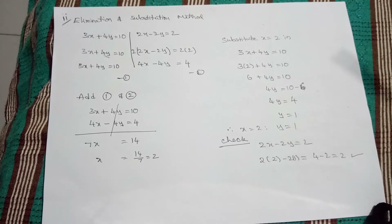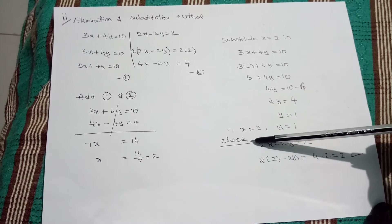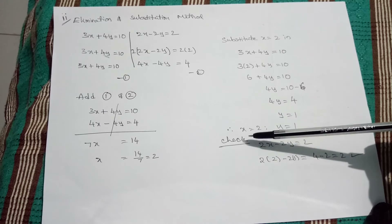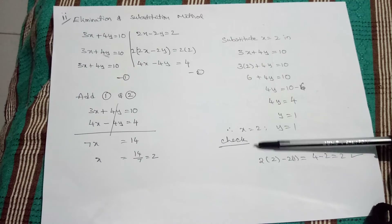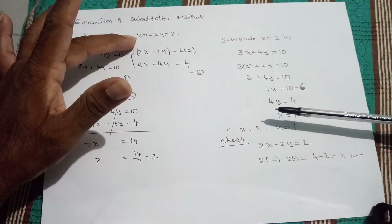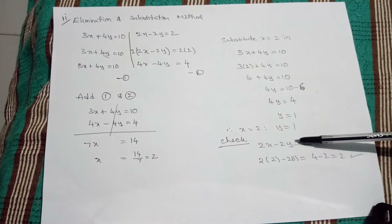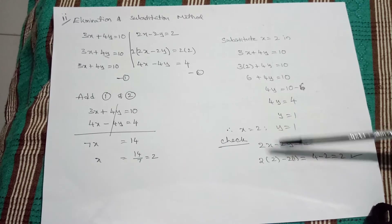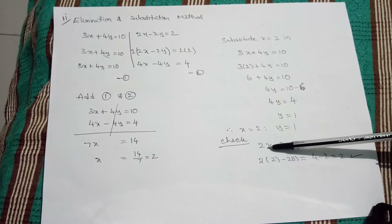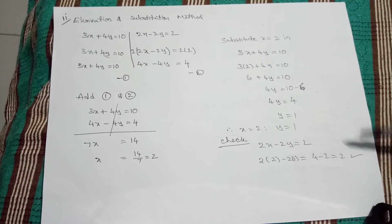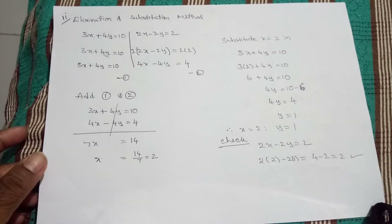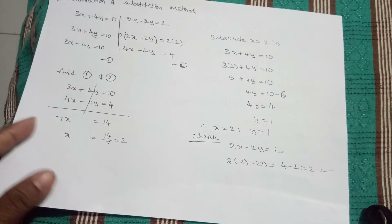For our clarity and confidence, just go for a check every time. The check is not given in the textbook, but for our comfort, take any equation — 2x minus 2y equal to 2. Substitute x equals 2 and y equals 1: 2 times 2 is 4 minus 2 times 1 is 2, so 4 minus 2 equals 2. We got our answer confirmed.